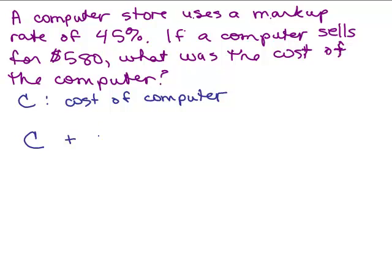The markup is 45% of whatever it cost. So you have to reason this out. So you take the actual cost of the computer plus this markup, right, which is 45% of the cost, and that is going to give you the selling price of the computer. So this is a little bit trickier.